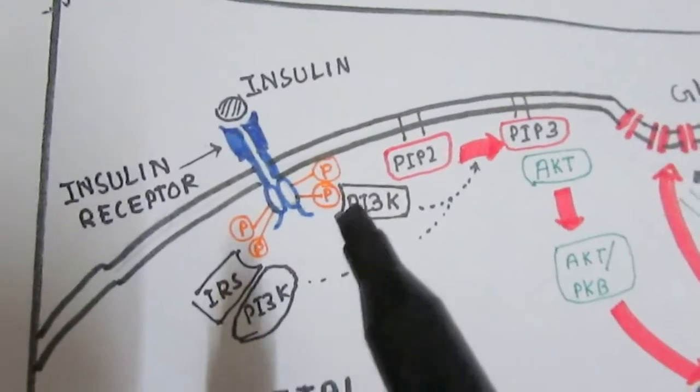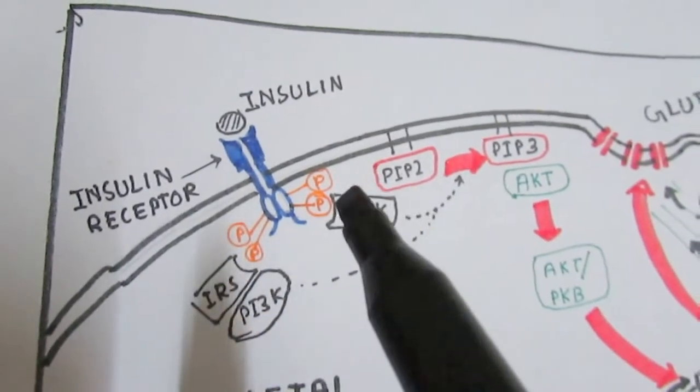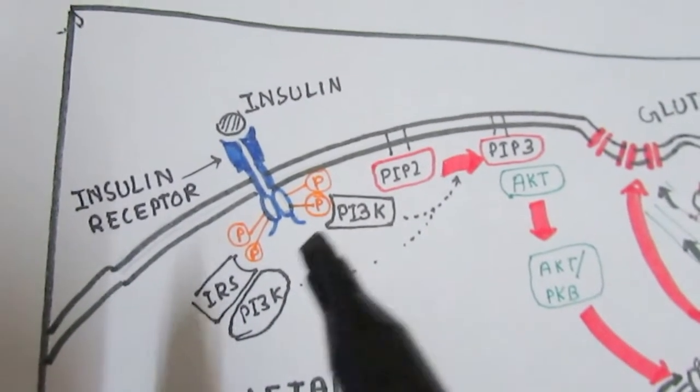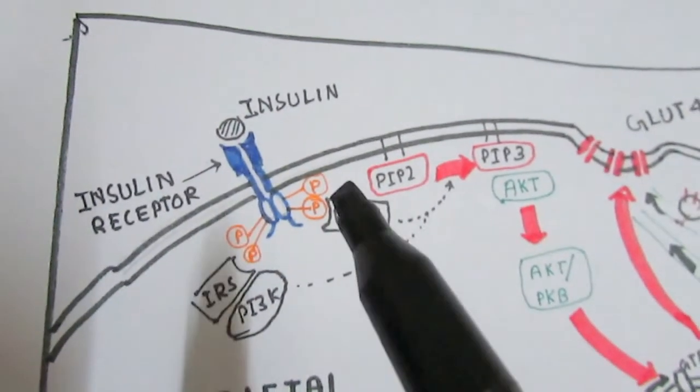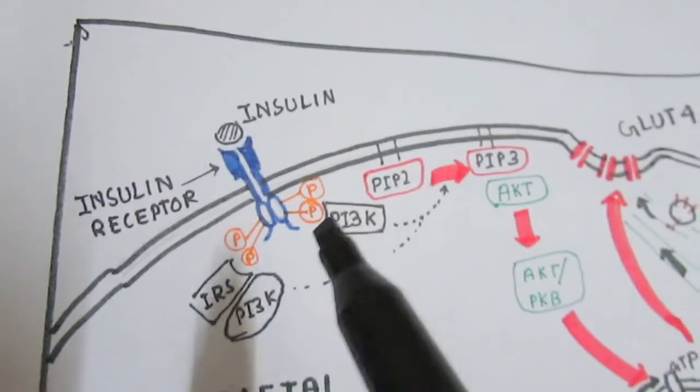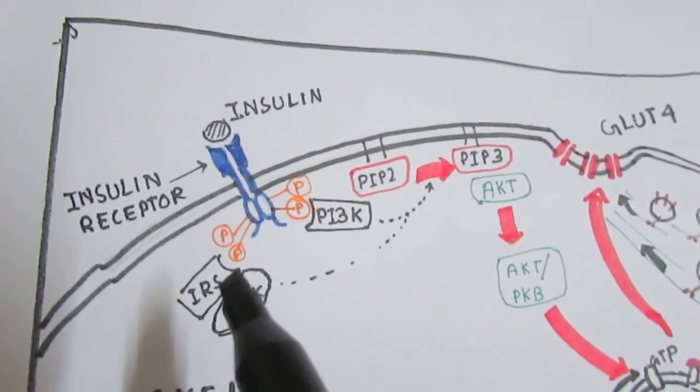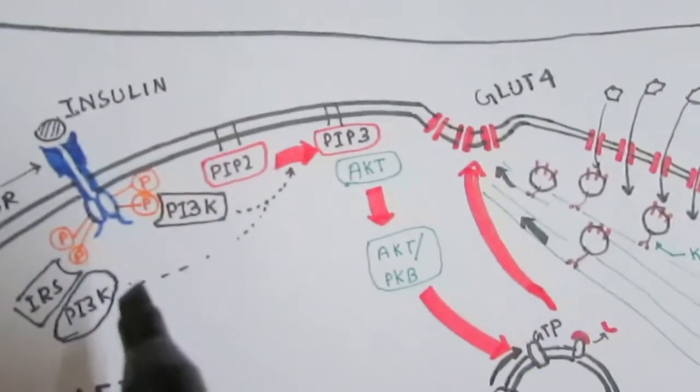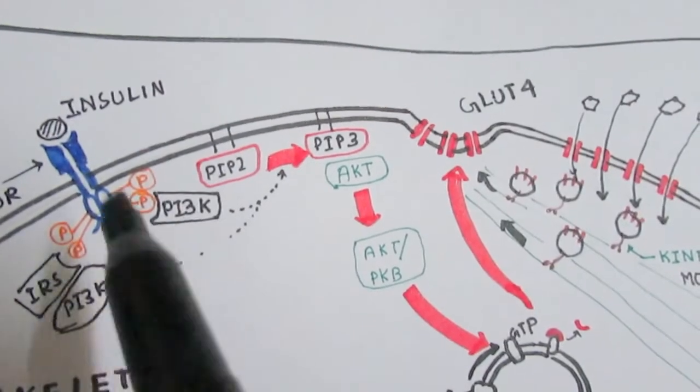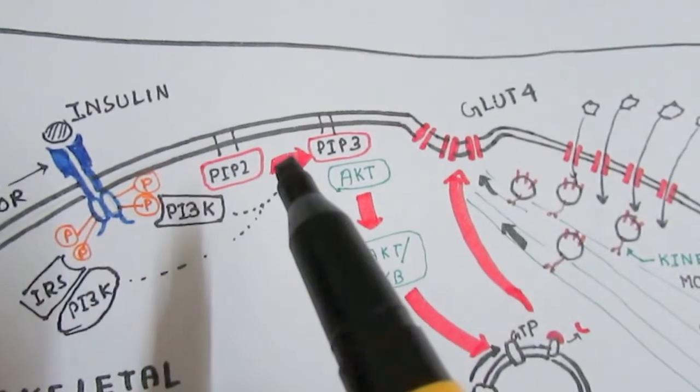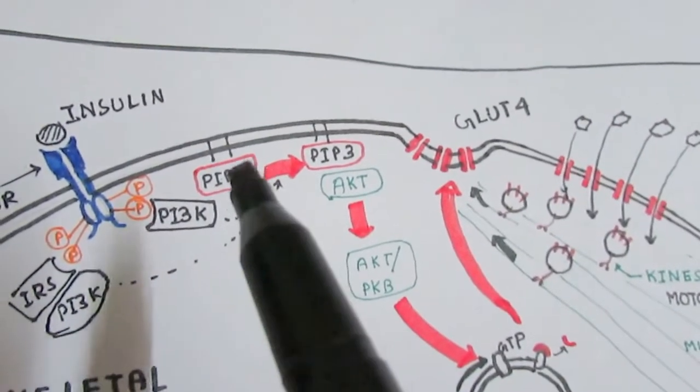With these tyrosine residues, another kinase can bind—PI3 kinase or PI3K, phosphatidylinositol 3-kinase. It could directly dock to the phosphorylation residue, or it can dock via the insulin receptor substrate, or IRS. Once PI3 kinase binds and activates, it will convert PIP2 to PIP3.